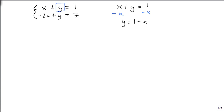Now I'm going to take this 1 minus x and plug it into the other equation wherever I see y. So I'm going to end up with minus 2x plus, and I'm replacing the y where I am substituting in 1 minus x in its place, and setting this equal to 7.